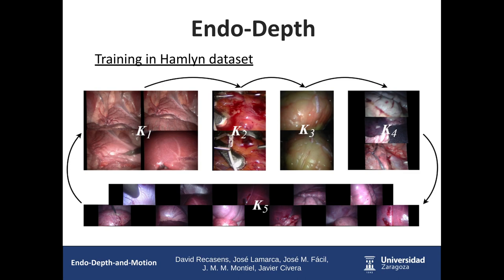In order to train on the Hamelin dataset, we redesign the training so that the network first trains on a group of videos with similar resolution and camera parameters. When it finishes viewing all images in that group, it moves to the next group. When all five groups have been used, the network has completed one epoch.